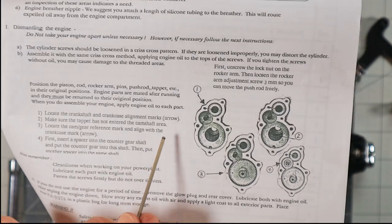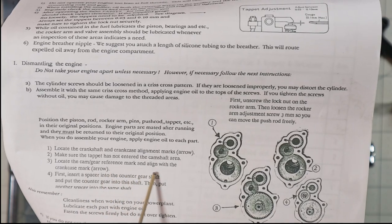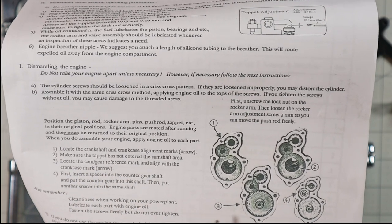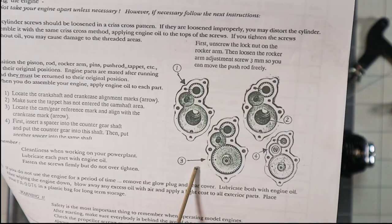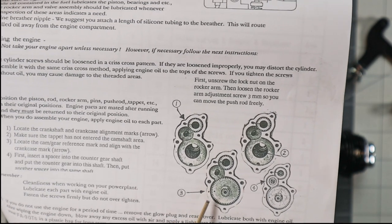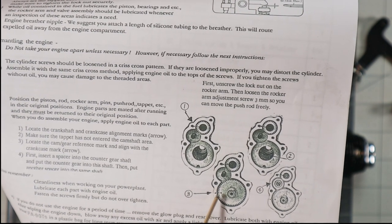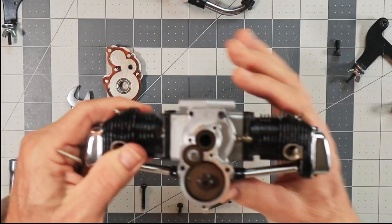That's for installing obviously. Locate the cam gear reference mark and align with the crankcase arrow. So like I just said, what I'm seeing on my crankcase is there's two dots here. And it almost kind of looks like that dot on the camshaft is supposed to be in between there because as I am looking at this right now.